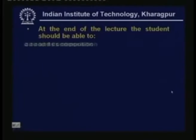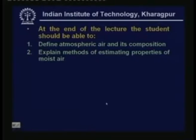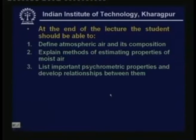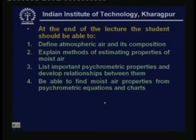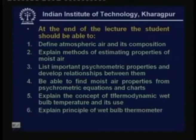At the end of the lesson you should be able to define atmospheric air and its composition, explain methods of estimating properties of moist air, list important psychrometric properties and develop relationships between them, find moist air properties from psychrometric equations and psychrometric charts, explain the concept of thermodynamic wet bulb temperature and its use, and explain the principle of wet bulb thermometer.